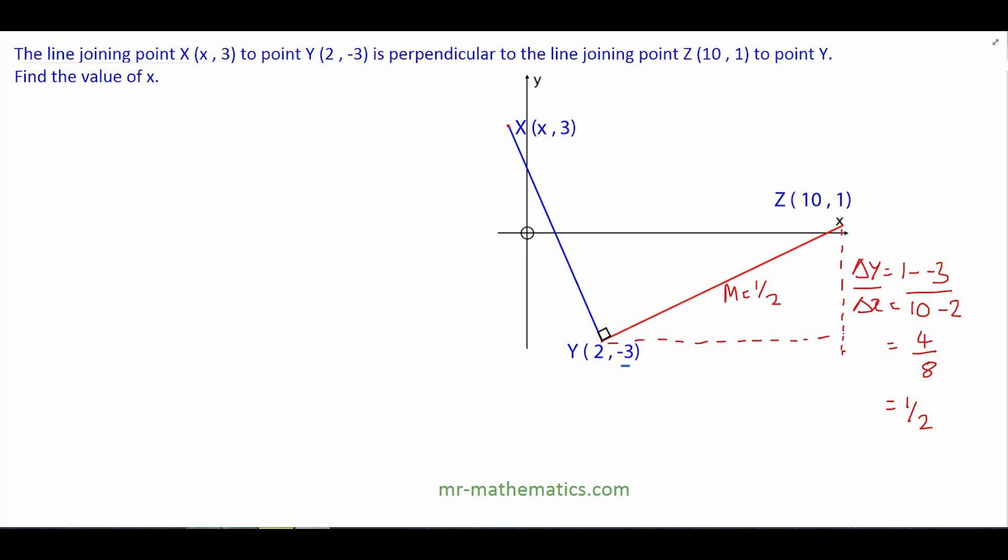We're told the blue line is perpendicular to that, which will be the negative reciprocal. So the blue line gradient will be negative 2.